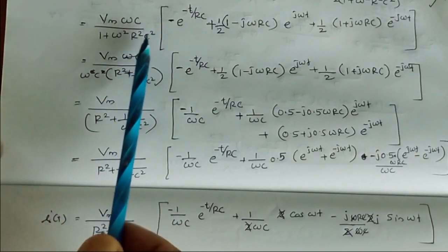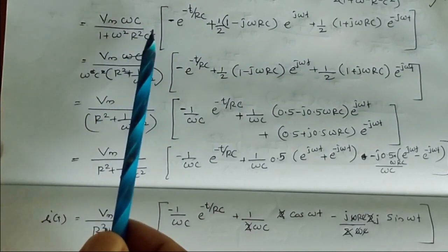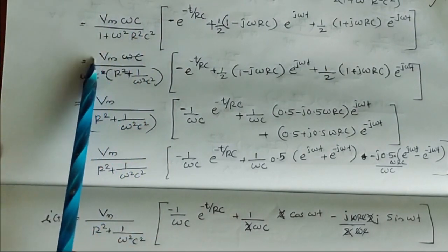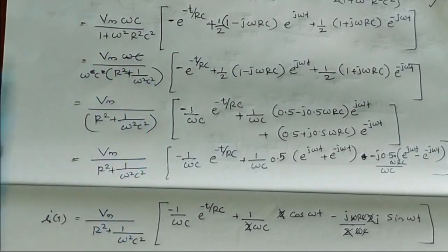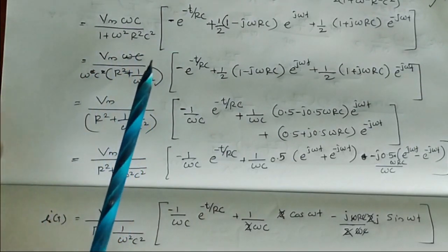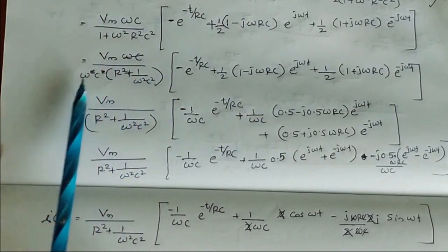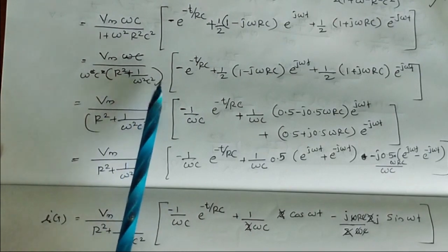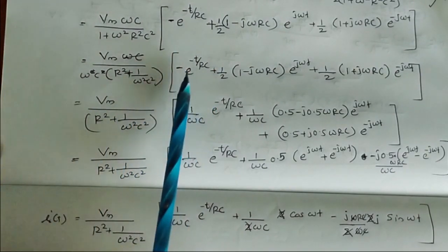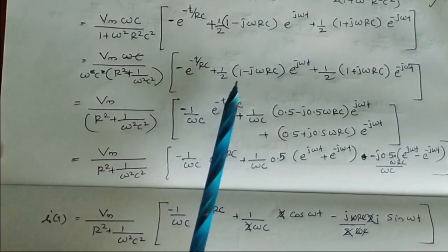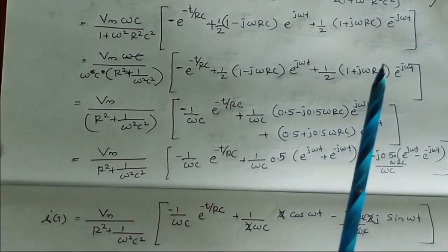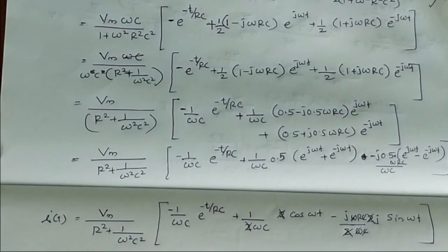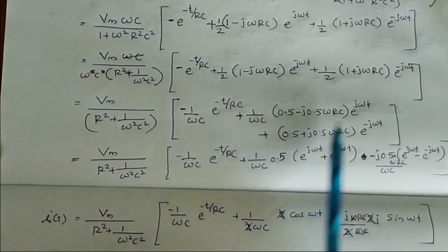Taking ω²C² common from the denominator, the expression becomes Vm / √(R² + 1/(ωC)²). Distributing (1/C) inside the bracket, and recognizing that the terms (1/2)·(1 − jωRC)·e^(jωt) + (1/2)·(1 + jωRC)·e^(−jωt) can be expressed using cosine and sine.